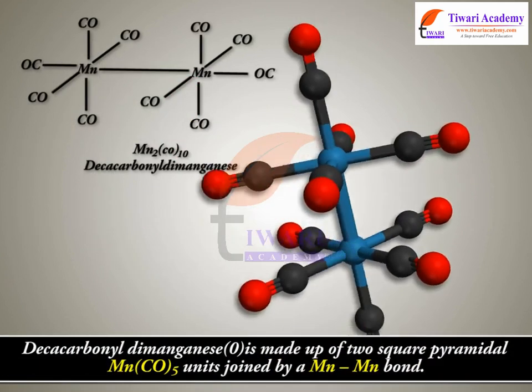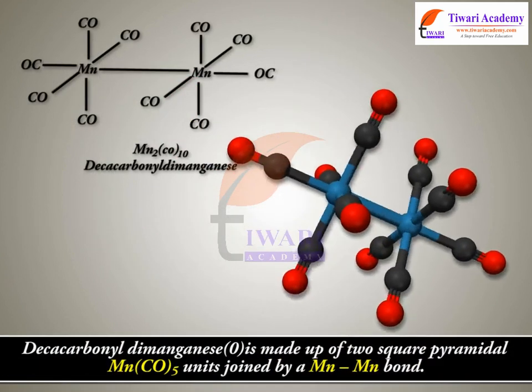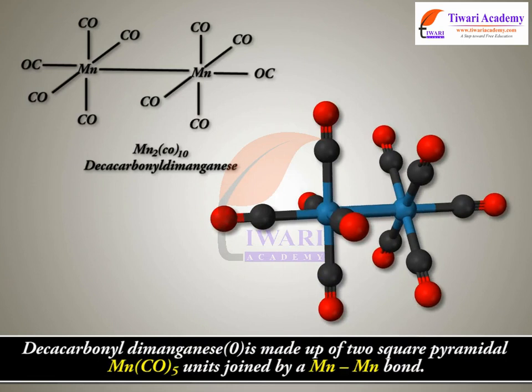Deca-carbonyl dimanganese(0) is octahedral. It is made up of two square pyramidal Mn(CO)₅ units joined by a Mn-Mn bond.